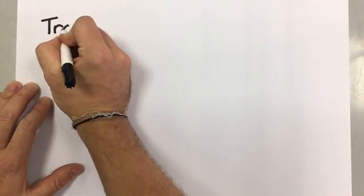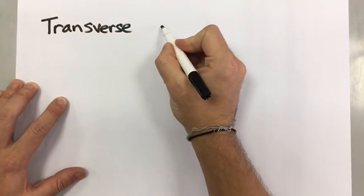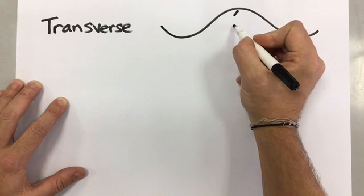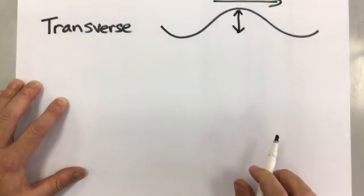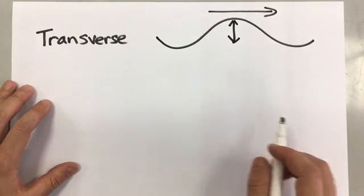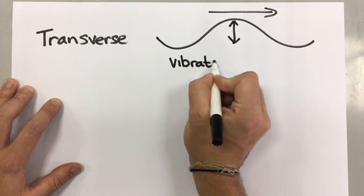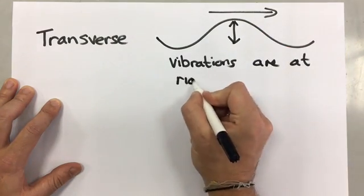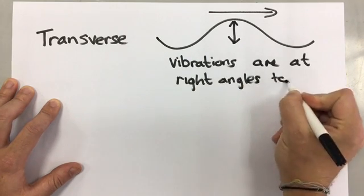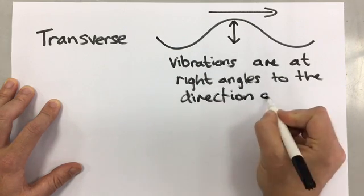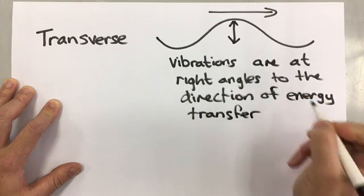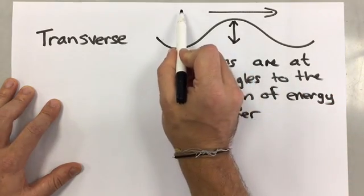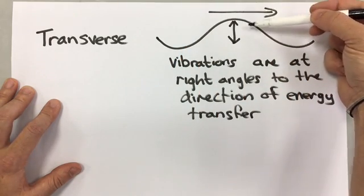Now there are two types of wave. The one that we have been talking about so far in water is called a transverse wave. A transverse wave, as you remember, the particles move up and down, and the wave moves that way. So the way that we describe a transverse wave is that the vibrations, these ones moving up and down, are at right angles to the direction of energy transfer. The energy is being transferred this way, but the vibrations are up and down. Perpendicular, right angles.